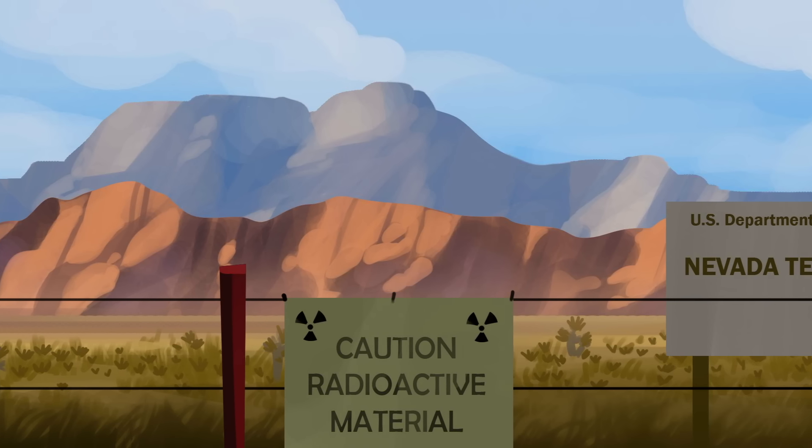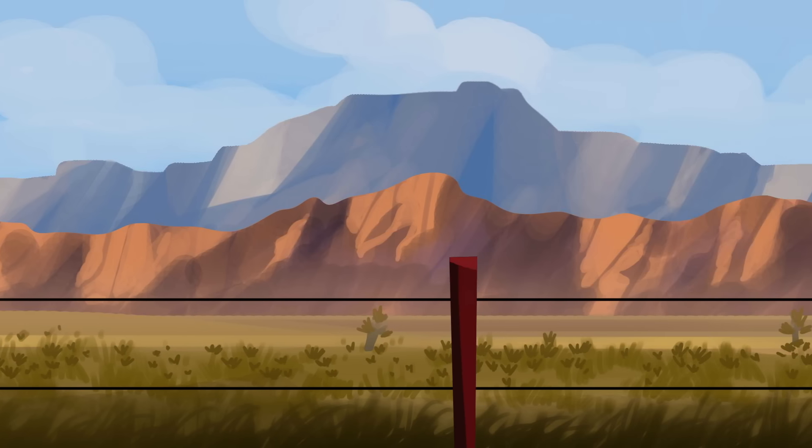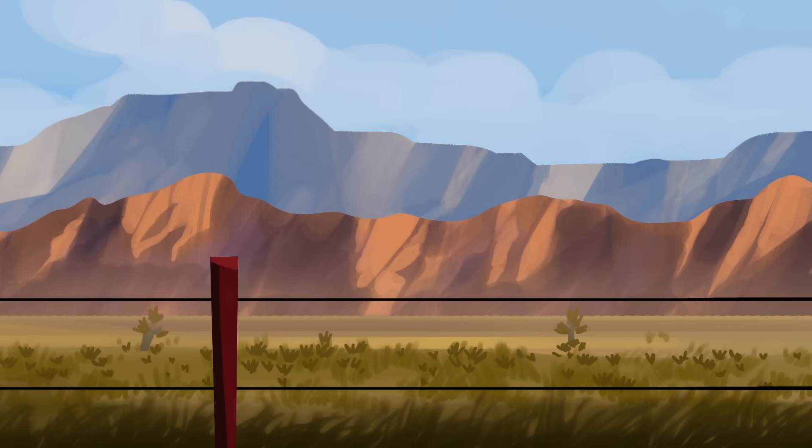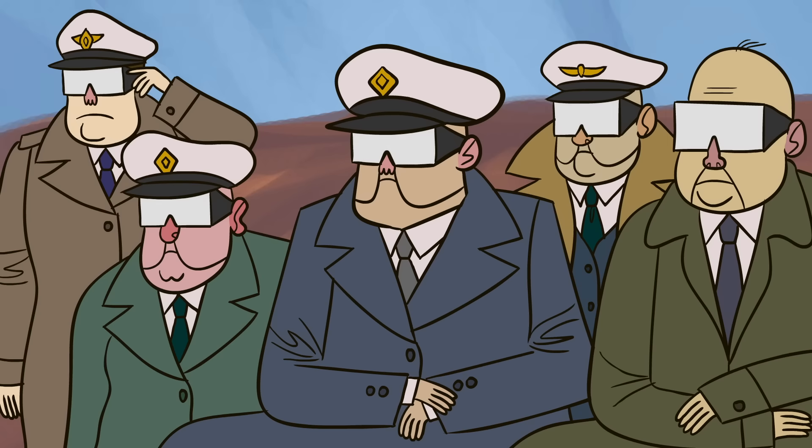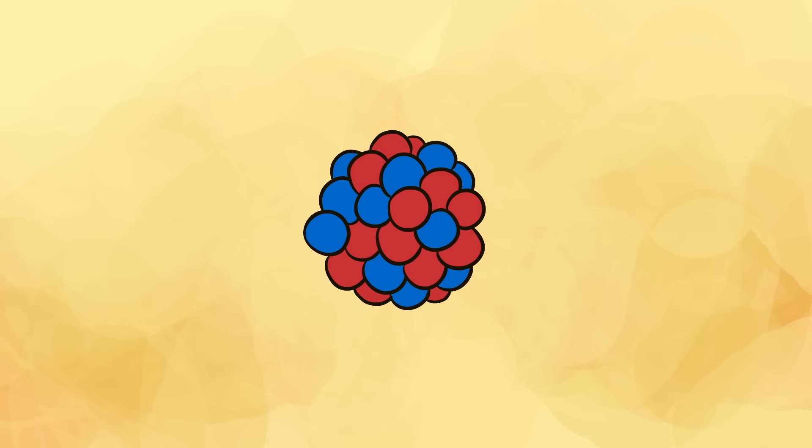But perhaps the most threatening elements are those that silently emit. Known as radioactive elements, these substances readily release energy, or decay, due to their highly unstable nuclear composition. This reactive nature is what's harnessed to create some of the world's most dangerous nuclear weapons.